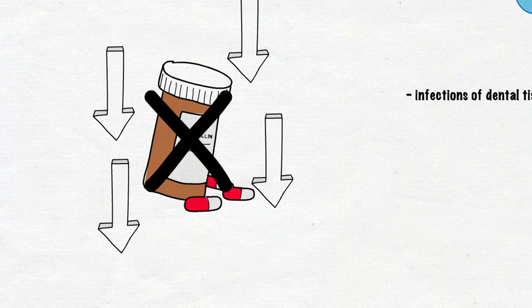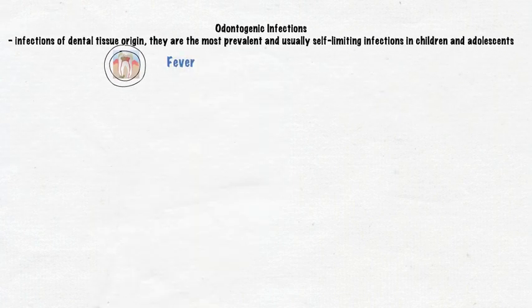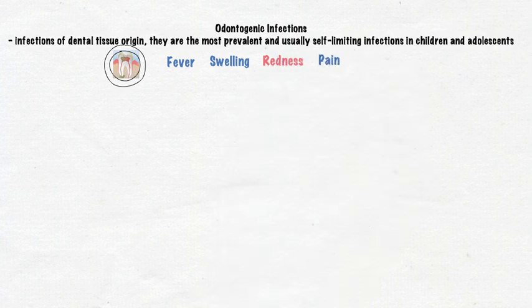However, when these bacteria replicate, their tendency is to spread. In these cases, we might see things like fever, facial swelling, redness, and pain, telling us that there is now systemic invasion and our patient is at high risk.